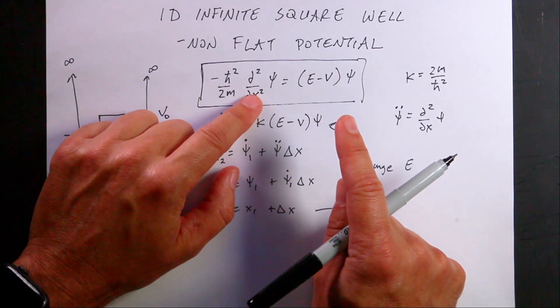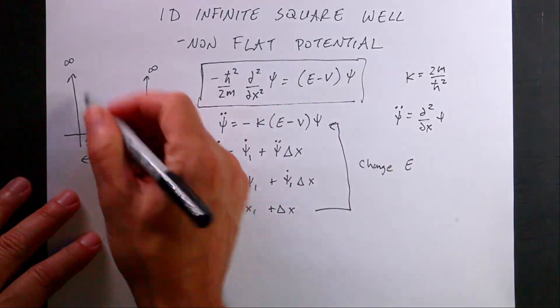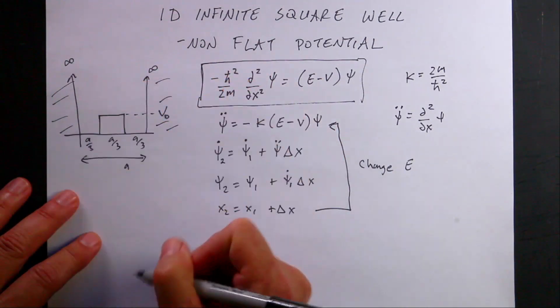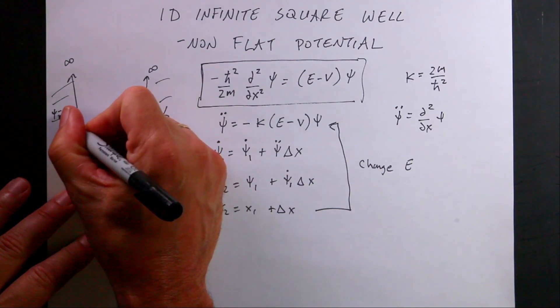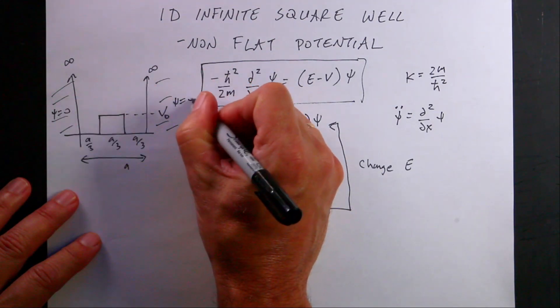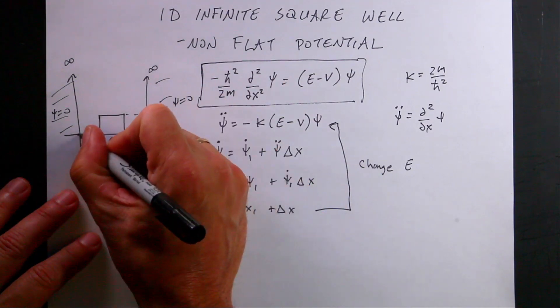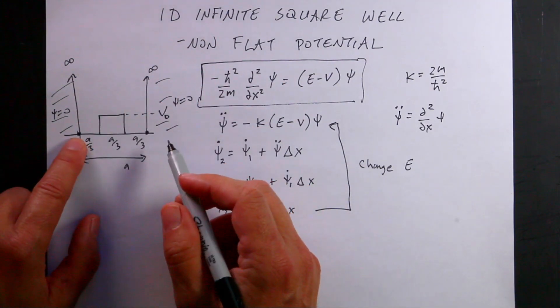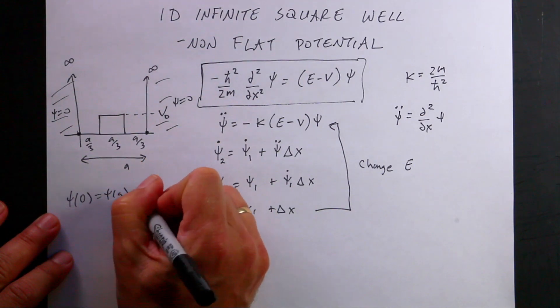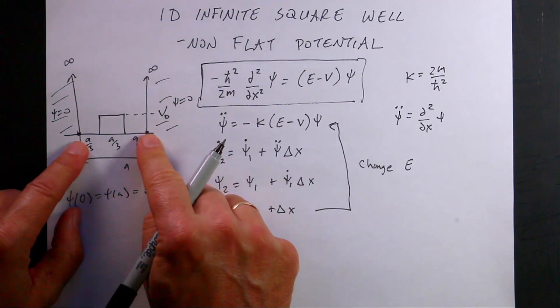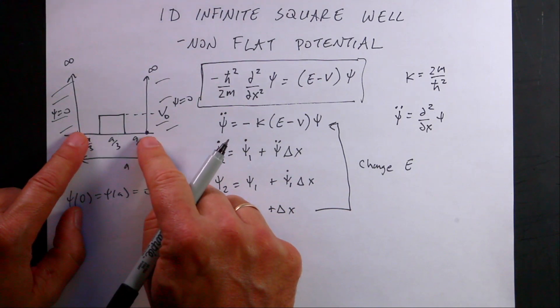And I only know psi at x equals 0. So if this is infinite square well on the sides, then psi cannot be here. So I know that psi is equal to 0 here and psi is equal to 0 here. That means that these are my two boundary conditions. psi at 0 equals psi at a equals 0.